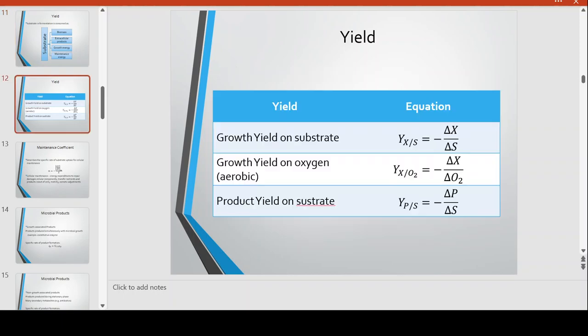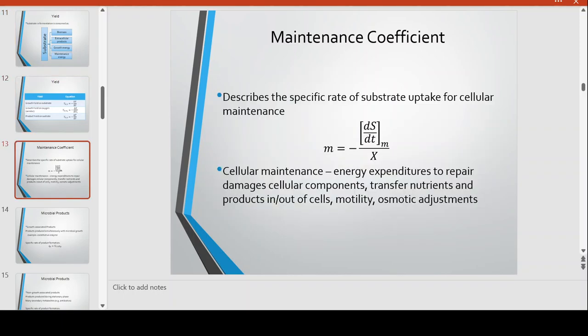Let's look at maintenance energy, described as the maintenance coefficient. This describes the specific rate of substrate uptake for cellular maintenance, where M is the cellular maintenance coefficient. This equals the change in the amount of substrate over time dedicated for maintenance divided by the number of cells.